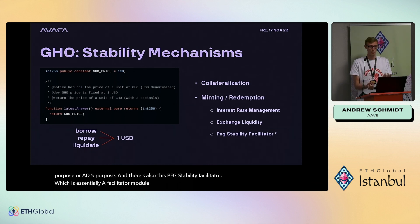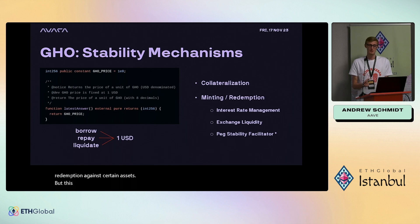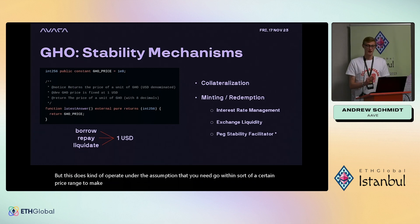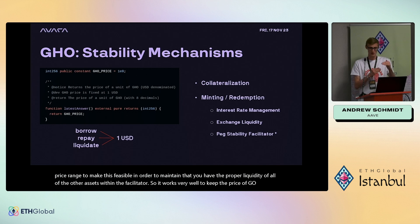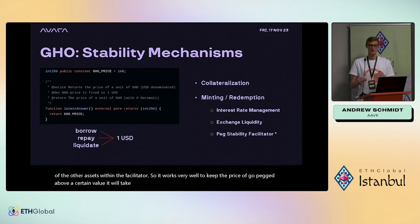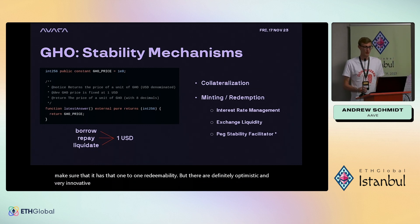There's also the peg stability facilitator — a module that would allow one-to-one minting and redemption against certain assets. This operates under the assumption that GHO needs to be within a certain price range for it to be feasible and to maintain proper liquidity of all other assets within the facilitator. It works well to keep GHO pegged above a certain value, though it will take maturity to build a solid collateral base for one-to-one redeemability. The governance forum has optimistic and innovative thinking about addressing these coordination problems.